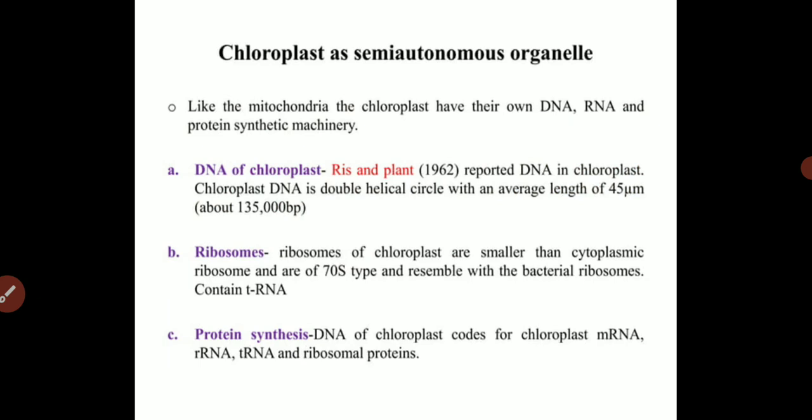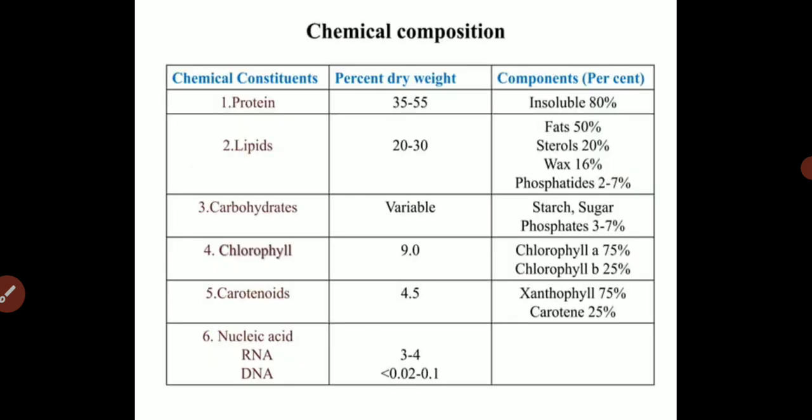An important note is that the ribosomes present in the chloroplast are the 70S type, very similar to bacterial ribosomes. This is a strong hint that the chloroplast is non-native to photosynthetic organisms. Scientists suggest that in the evolutionary process, photosynthetic bacteria like blue-green algae may have accidentally entered eukaryotic cells and become part of them in subsequent generations — this is the basis of the endosymbiotic theory.